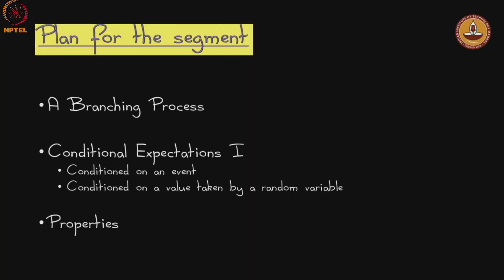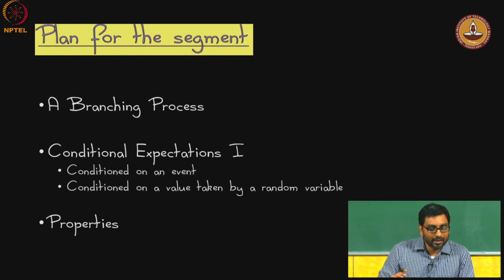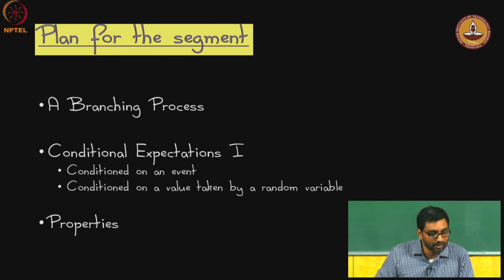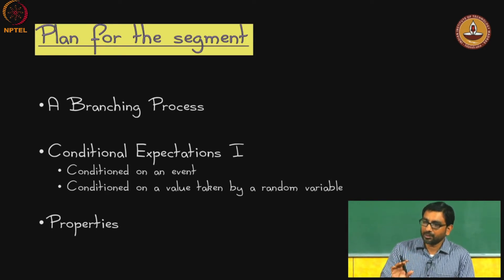Let us start the third segment in our second module. So far we have looked at the expectation of a random variable. What we will do this time is look at extending the idea to include what is called conditional expectation. There are two variants of this notion — we will look at the first variant in this segment and the second variant next, as the same term is used to denote two slightly different concepts.